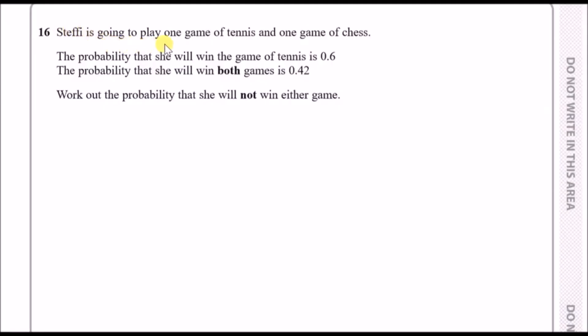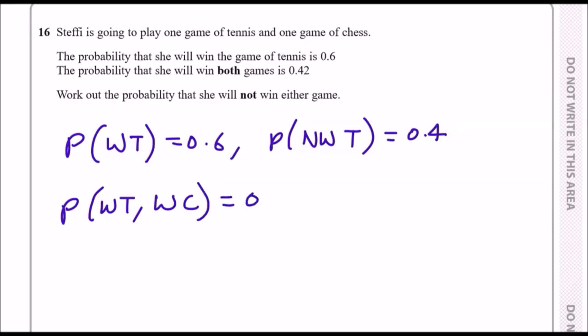Steffi is going to play 1 game of tennis and 1 game of chess. The probability that she will win the game of tennis is 0.6. So the probability that she does not win tennis is 0.4, because all probabilities must sum up to 1. The probability that she will win both games is 0.42. This means the probability that she will win tennis and also win at chess is 0.42.